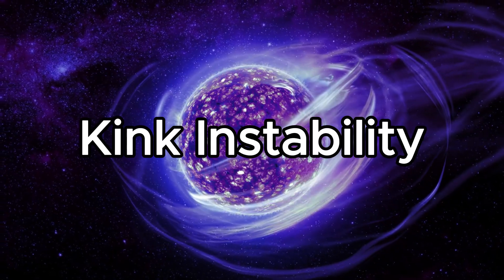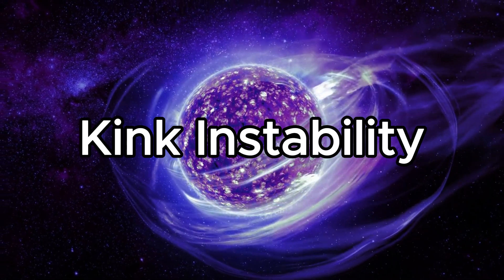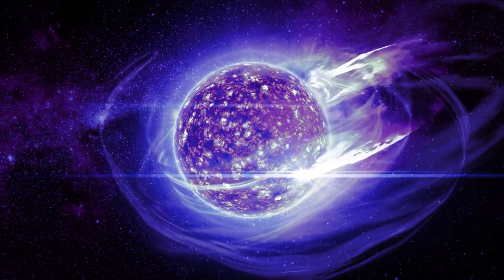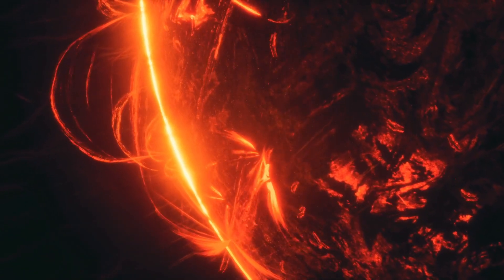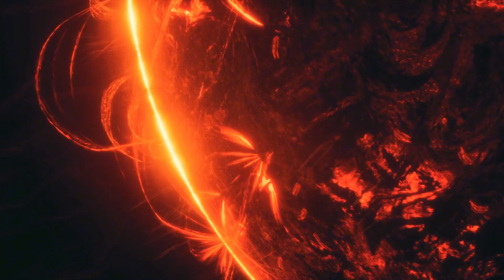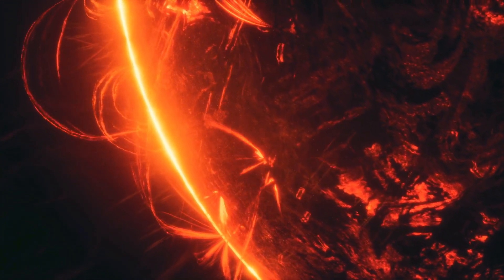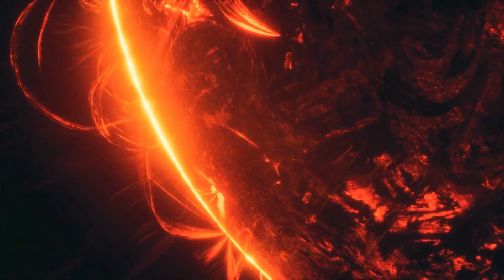Kink instability happens when a magnetic field inside a plasma loop, like a solar prominence, becomes too twisted. The field lines snap into a new configuration, sometimes releasing energy explosively.